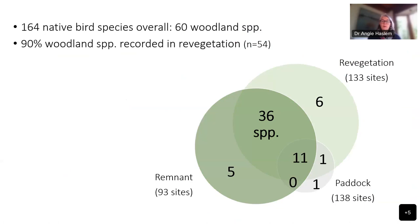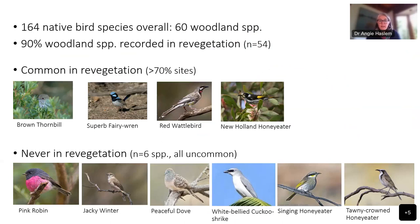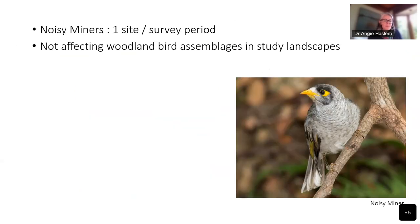Across all landscapes in both survey periods, we recorded a total of 164 native bird species, 60 of which were woodland-dependent species — the ones we're particularly hoping revegetation will return to the landscape. Ninety per cent of these woodland species were recorded at one point in time in our revegetation sites, which broadly shows that revegetation increases the richness of woodland birds by over 400% compared to open farmland areas. Species commonly recorded in revegetation included Brown Thornbill, Superb Fairy-wren, Red Wattlebird and New Holland Honeyeater. The noisy miner was very rarely recorded in this study, so it was not going to affect results the way Caroline described.